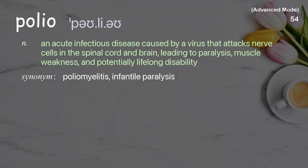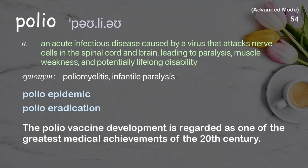Polio: An acute infectious disease caused by a virus that attacks nerve cells in the spinal cord and brain, leading to paralysis, muscle weakness, and potentially lifelong disability. Examples: Polio epidemic. Polio eradication. The polio vaccine development is regarded as one of the greatest medical achievements of the 20th century.